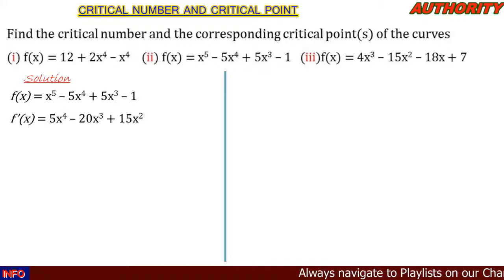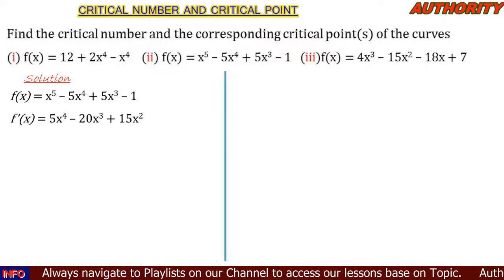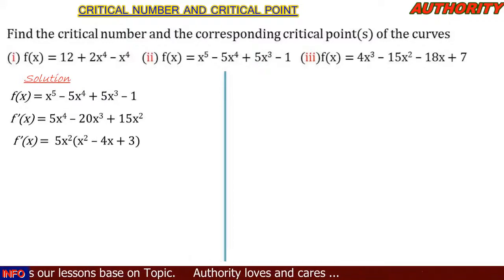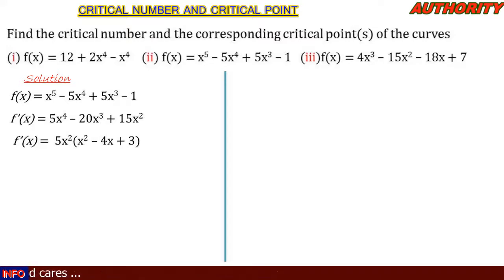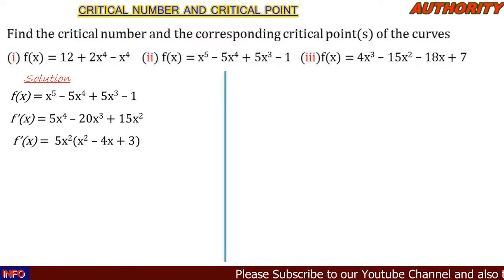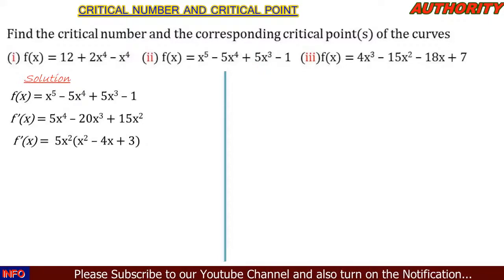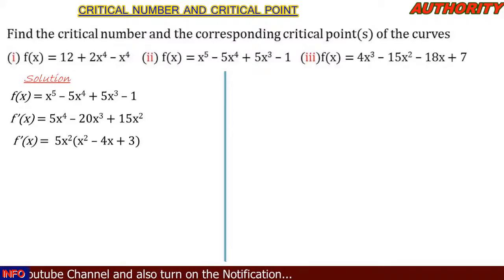We have 5x⁴ - 20x³ + 15x². Looking at what these terms have in common, we can factor out 5x². Factoring out 5x² from 5x⁴ leaves x²; from -20x³ leaves -4x; and from 15x² leaves 3. So f′(x) = 5x²(x² - 4x + 3). We verify: 5x²·x² = 5x⁴, 5x²·(-4x) = -20x³, and 5x²·3 = 15x².